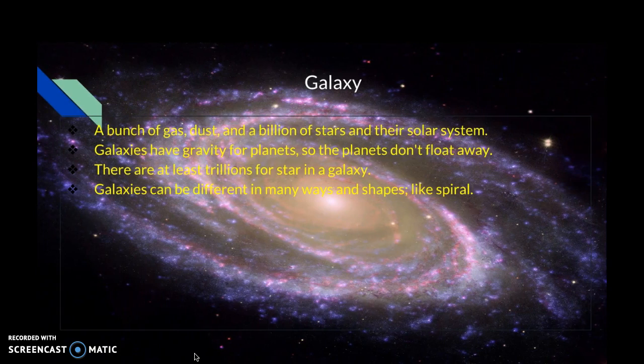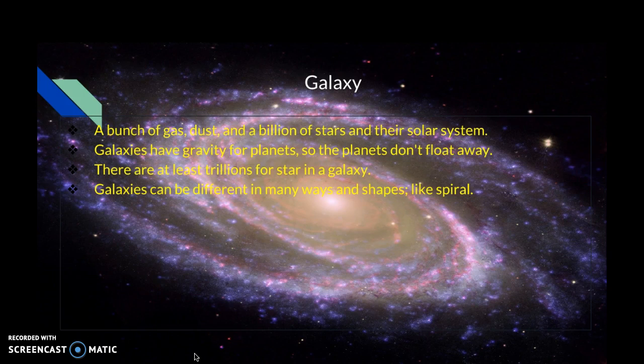A galaxy is a bunch of gas, dust, and billions of stars and their solar systems. Galaxies have gravity for planets so the planets don't float away.